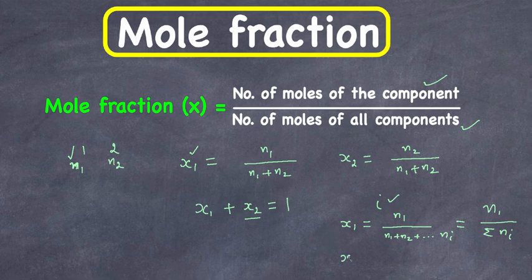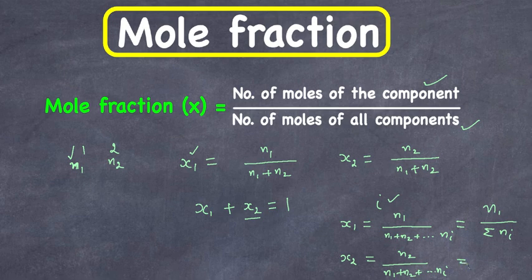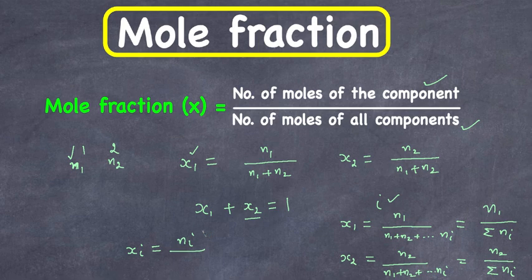Similarly, x2 is going to be n2 divided by n1 plus n2, continuing up to n_i — so it equals n2 divided by the summation of n_i. In general, x_i is equal to n_i divided by the summation of n_i.